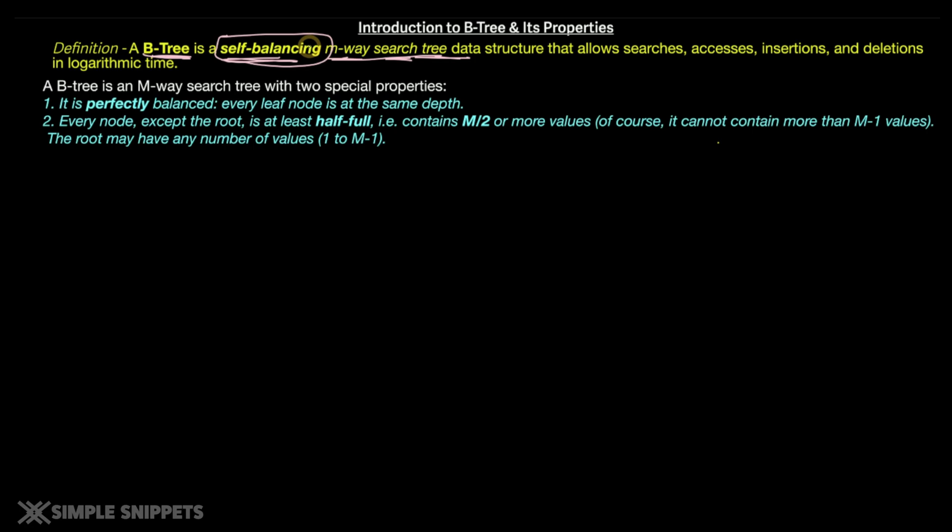So B-tree is a self-balancing M-way search tree that allows searches, accesses, insertion and deletion operations in a logarithmic time. So this is the most efficient time when you want to do operations on tree data structure and in order to be an efficient tree, it has to be self-balanced or it has to be completely balanced.